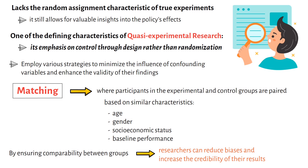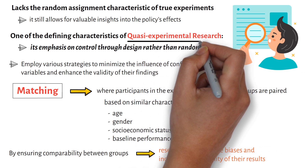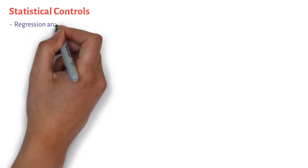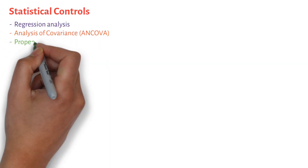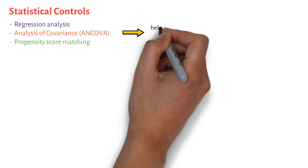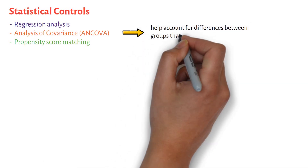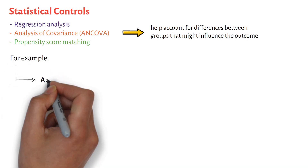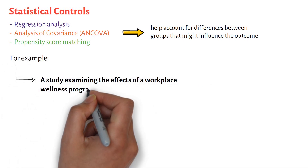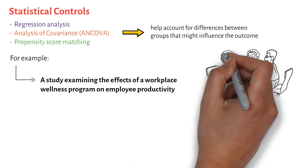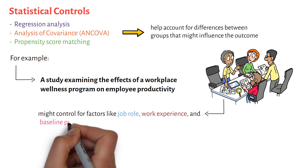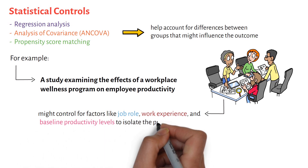Another strategy often employed in quasi-experimental research is the use of statistical controls. Techniques such as regression analysis, analysis of covariance, or propensity score matching help account for differences between groups that might influence the outcome. For example, in a study examining the effects of a workplace wellness program on employee productivity, researchers might control for factors like job role, work experience, and baseline productivity levels to isolate the program's impact.